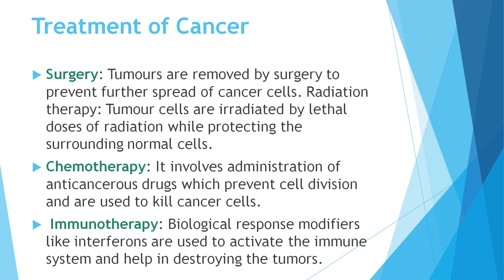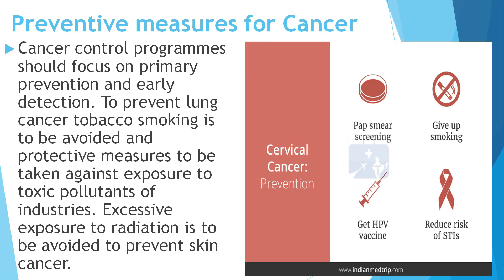Preventive measures for cancer: cancer must be identified and diagnosed in the early stage, because in a later stage it cannot be cured. Cancer control programs should focus on primary prevention and early detection. Lung cancer can be prevented by avoiding smoking. Individuals should not be exposed to toxic pollutants from industries, and excessive exposure to radiation should also be avoided to prevent skin cancer.